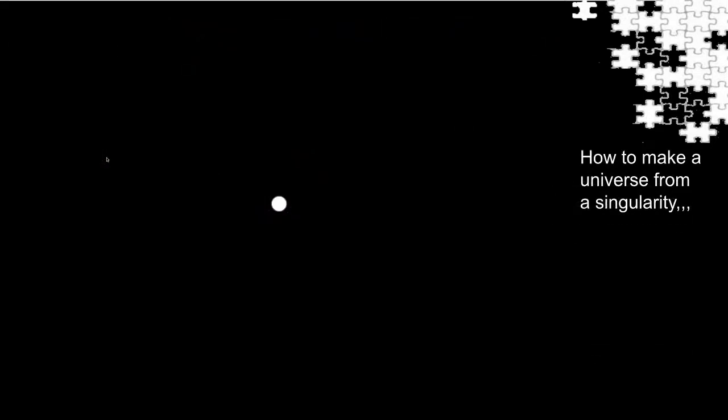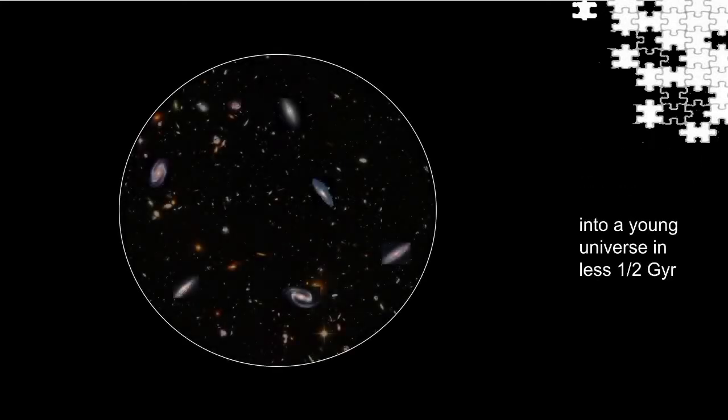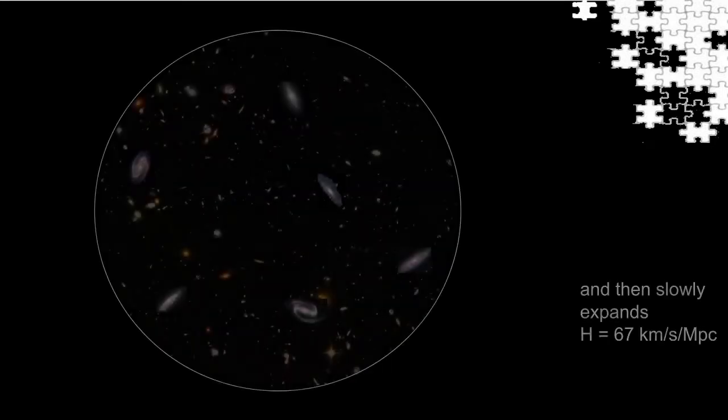Let's make a thought experiment. The challenge is, how can I make a universe from a singularity within 500 million years, without matter exceeding the speed of light, and then have it slowly expand with Hubble's constant? It seemed at first impossible.